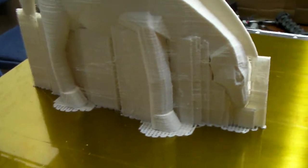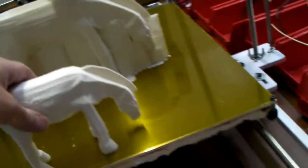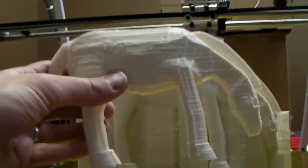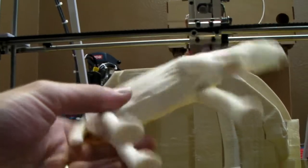You can see the support material around the horse. When the horse is done printing, this is a smaller one, you can see the support material has been removed.